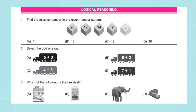The first section in the question paper is Logical Reasoning. Question number 1: Find the missing number in the given number pattern. The number pattern is: 20, 17, 14, ___, 8. Option A: 11, Option B: 13, Option C: 12, Option D: 10.